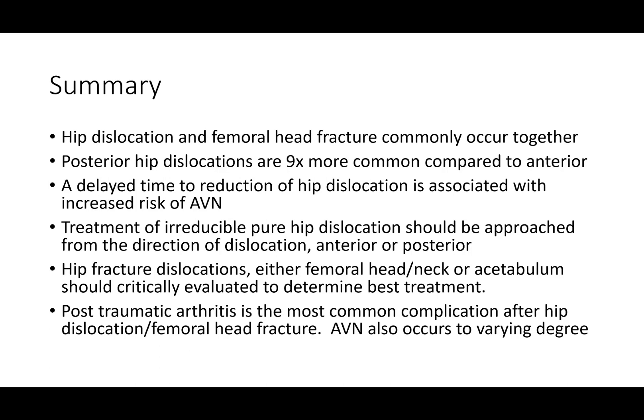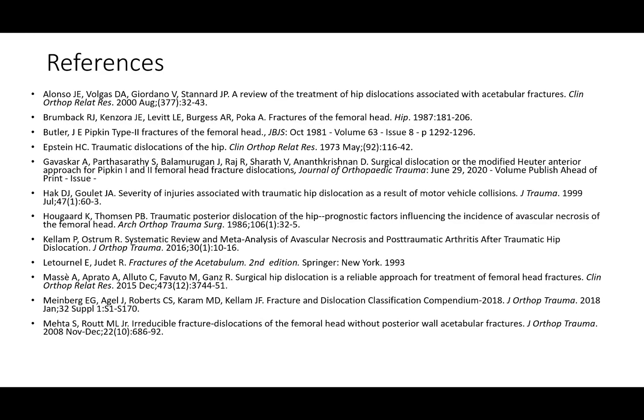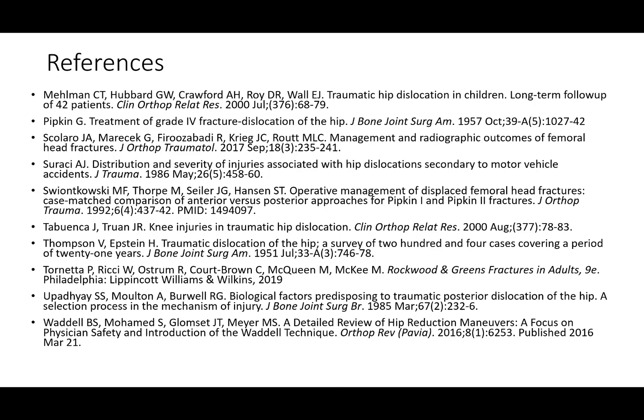In summary: hip dislocation and femoral head fractures commonly occur together. Posterior hip dislocations are much more common than anterior. Delayed time to reduction is associated with increased risk of osteonecrosis. Treatment of irreducible pure hip dislocation should be approached from the direction of the dislocation. Hip fracture dislocations involving the femoral head, neck, or acetabulum should be critically evaluated to determine the best treatment. Post-traumatic arthritis is the most common complication; osteonecrosis also occurs to a varying degree. Thank you very much — that concludes our lectures on hip dislocations and femoral head fractures.